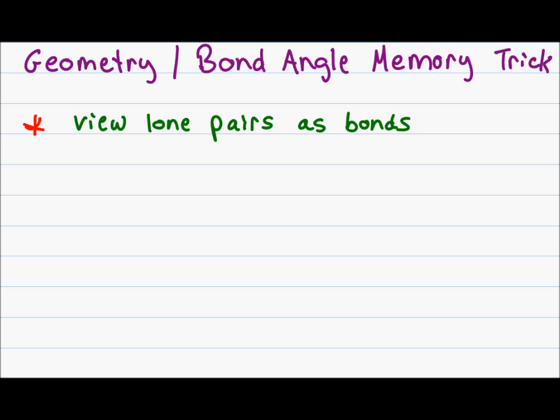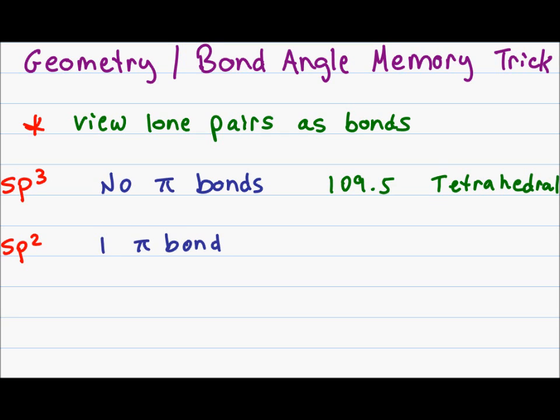The first tip is to view all lone pair electrons as if they are bonds. This includes the lone pairs on oxygen in a water molecule or the lone pairs on nitrogen in an ammonia molecule. To recognize an sp3, look for double or triple bonds. If there are no double bonds and no triple bonds, you are most likely dealing with an sp3 hybridization.